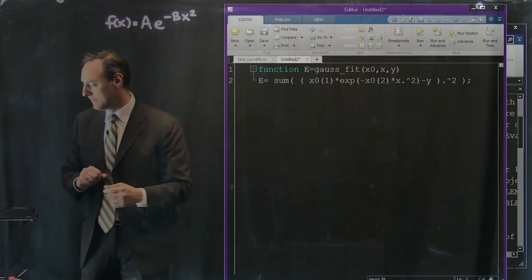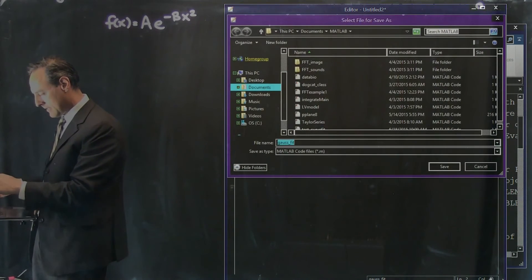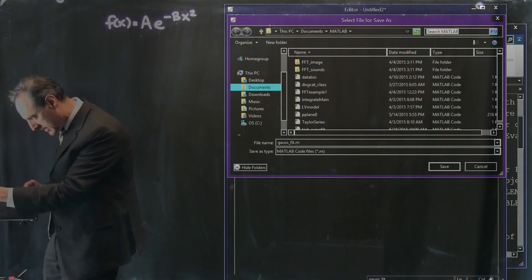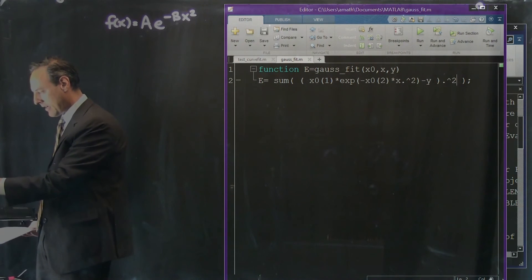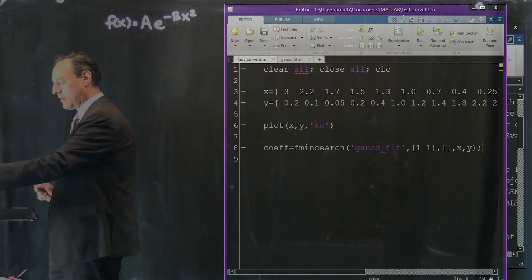So let's save this. Save as gaussfit.m. Save. And now I can come back to test curve and let's just see if this thing runs. Oops.